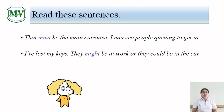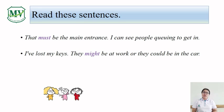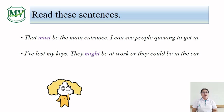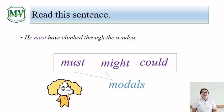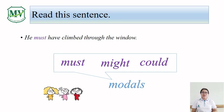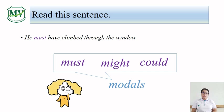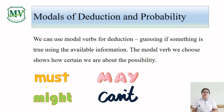First of all, I would like you to read these sentences. 'That must be the main entrance. I can't see people queuing to get in.' 'I've lost my keys. They might be at work or they could be in the car.' 'He must have climbed through the window.' You can notice the words in purple color: must, might, and could. All of them are modals. We use modals for deduction — guessing if something is true using available information — and the modal we choose shows how certain we are about the possibility.